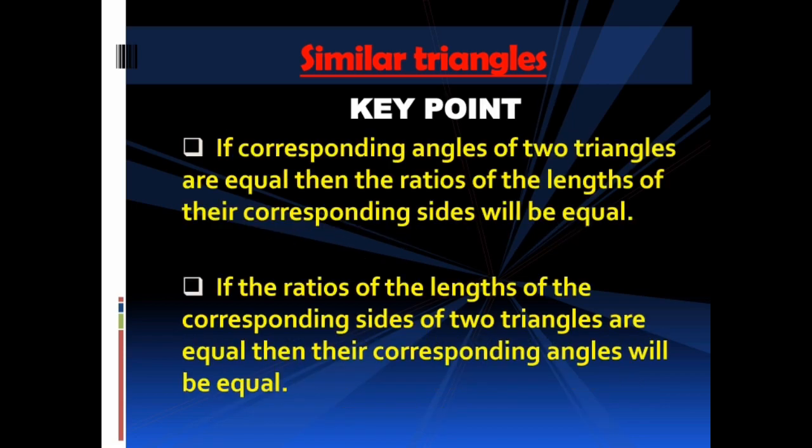However, you can observe this key point with triangles. If corresponding angles of two triangles are equal, then the ratios of the lengths of their corresponding sides will be equal. And if the ratios of the lengths of the corresponding sides of two triangles are equal, then their corresponding angles will be equal. Thus, if one of the conditions for similarity of the triangles is satisfied, automatically the other will be satisfied. Therefore, we actually need not check both conditions, since the occurrence of one makes the other possible.